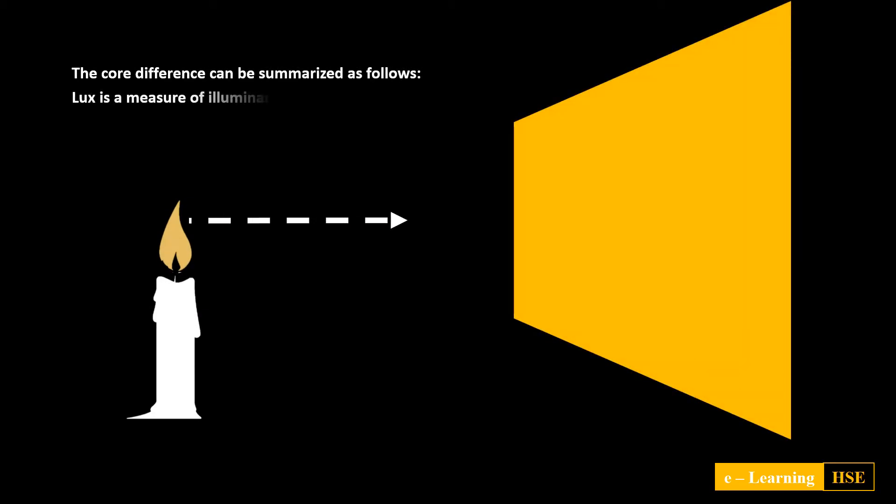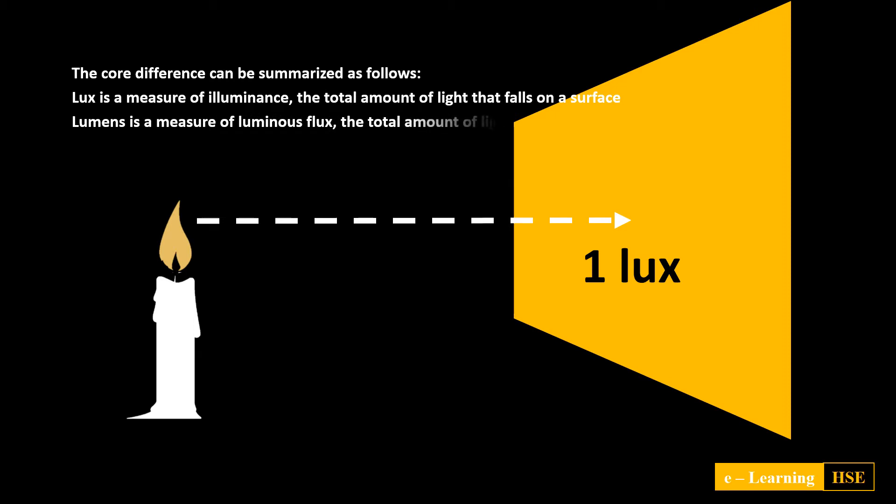Lux is a measure of illuminance, the total amount of light that falls on the surface. Lumens is a measure of luminous flux, the total amount of light emitted in all directions.